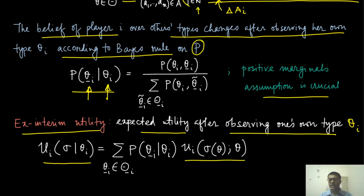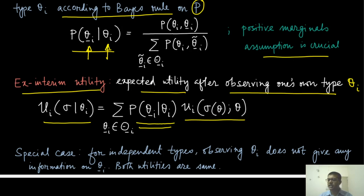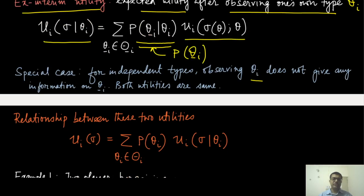The innermost sum is still the same utility, but now the expectation is taken with respect to this conditional probability. The conditional probability given theta_i — the distribution is over theta minus i. Only for the special case where the types are independent can you write this as P of theta minus i, because you don't get anything different when you condition over theta_i. In that case, observing theta_i does not give you any information about the other thetas, and both utilities become the same.